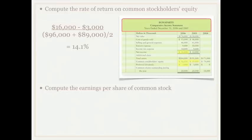What this tells us is that for every one dollar invested by a common stockholder, the company is earning 14.1 cents. To determine if this is an appropriate rate of return on common stockholders' equity, you would really want to go out and investigate this amongst the other companies in the same industry.